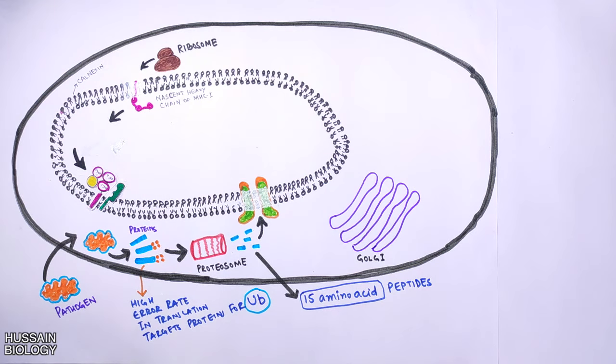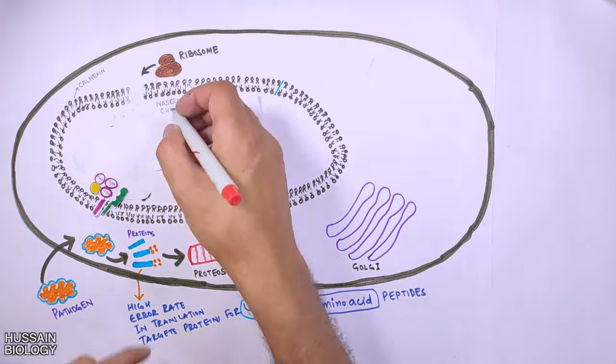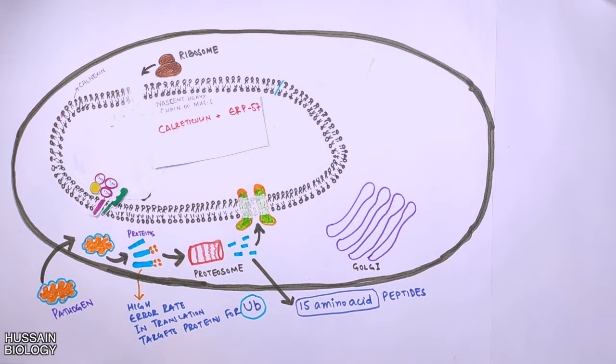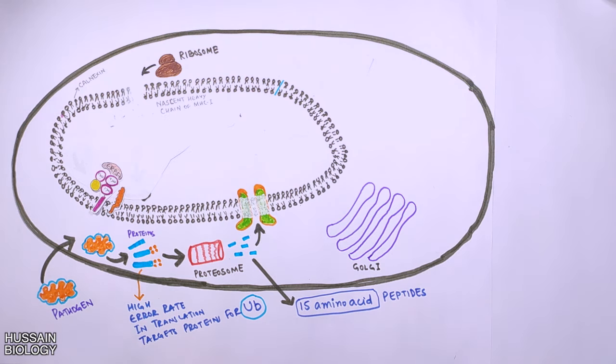Furthermore, this calnexin protein is replaced with another chaperone protein called calreticulin. Within the endoplasmic reticulum we have the calreticulin and an oxidoreductase enzyme called ERP57. The calreticulin takes over the function of calnexin protein, which is the chaperoning. There is also association of another enzyme, ERP57, which is also known as protein disulfide isomerase A3. This enzyme helps in the formation of disulfide bonds within the protein structure of the MHC molecule.